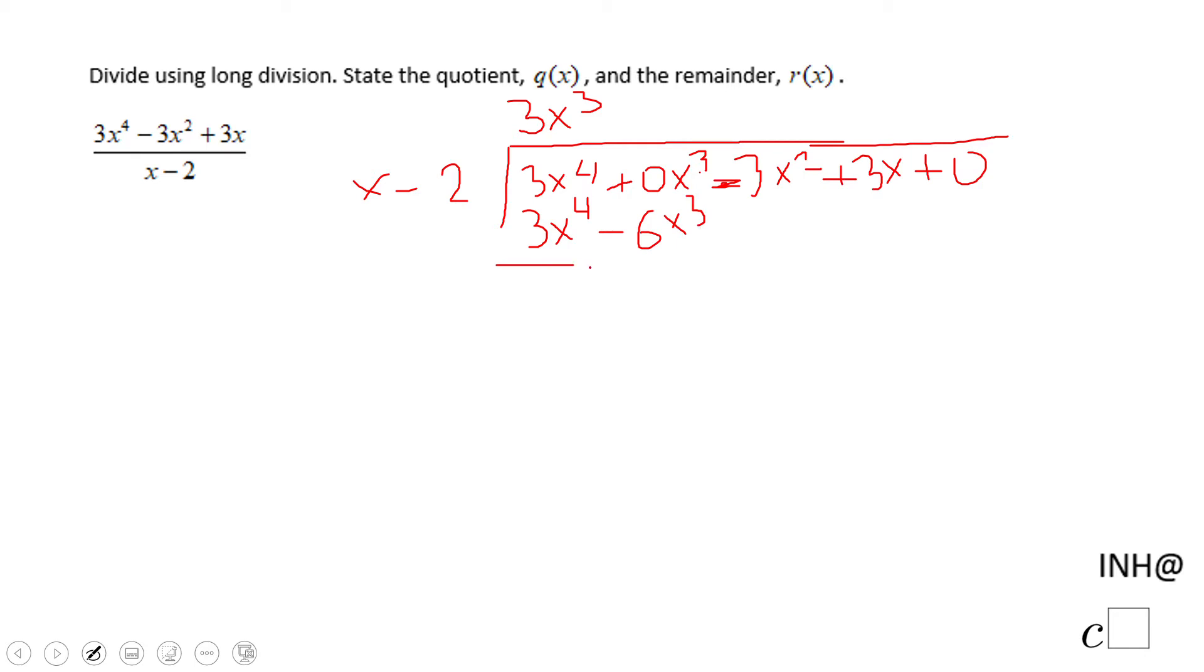And now you notice why we need that 0x³—because it helps us to do this subtraction, okay? 3x to the 4th powers cancel out. Let's see what we have left after that. We have 0x³ minus negative 6x³, and that is positive 6x³, minus 3x².